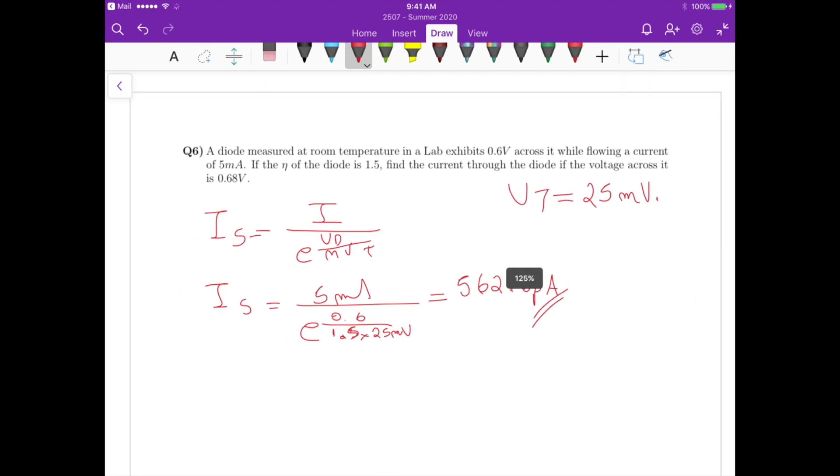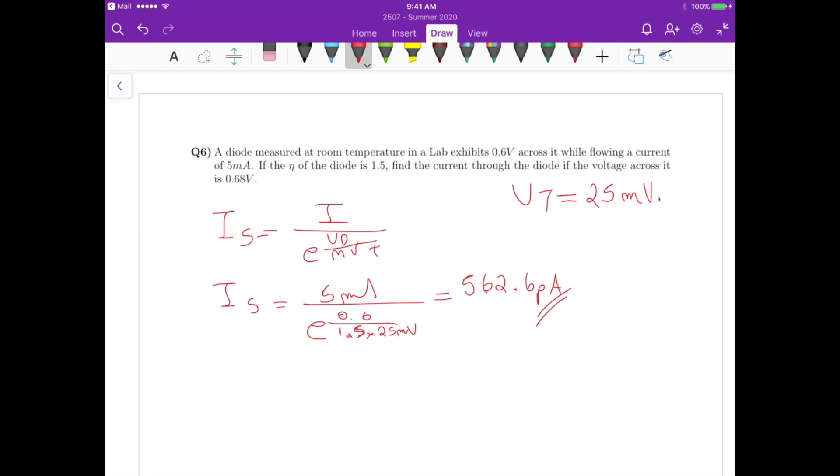Now for the new condition where Vd equals 0.68 volts, the new current, so let me use a different color, the new current I is going to be equals to the saturation current times exponential of Vd divided by the ideality factor times the thermal voltage.